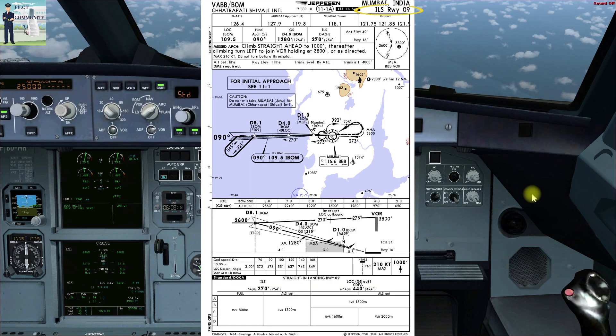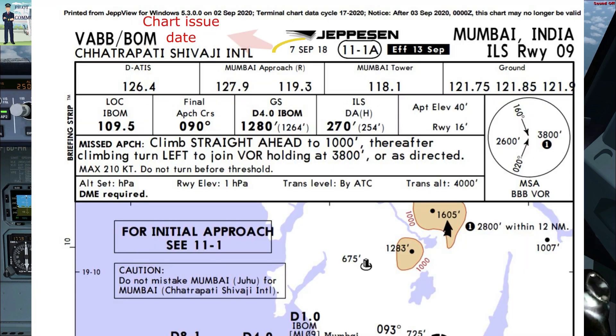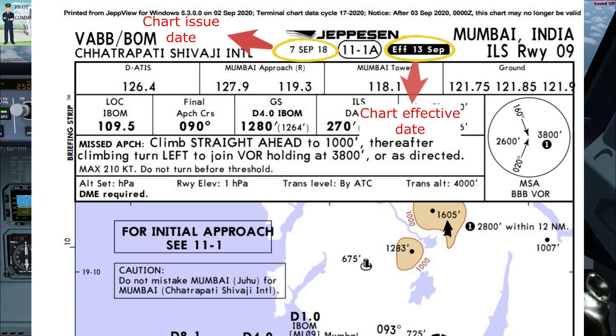This will be an ILS approach for runway 09 Mumbai, India. Chart issued on 7th September 2018 with effect from 13th September 2018.